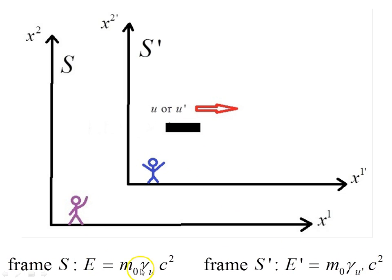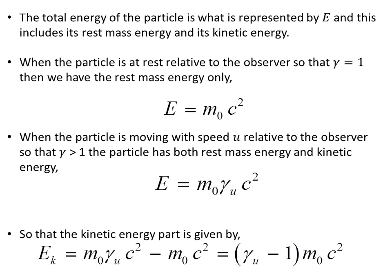The purple observer sees this energy, the blue observer sees this energy; both are observing the same object but in two different frames. These frames may or may not be moving relative to each other. The total energy of the particle is represented by E, and this includes its rest mass energy and its kinetic energy.